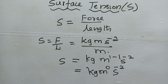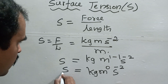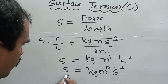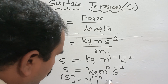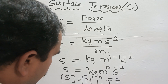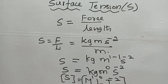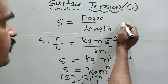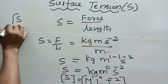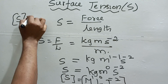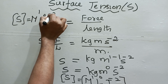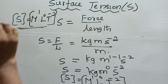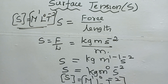Since the length term gives m to the power 0, you can neglect it or write it as L to the power 0. So the dimensional formula of surface tension is M to the power 1, L to the power 0, T to the power minus 2.